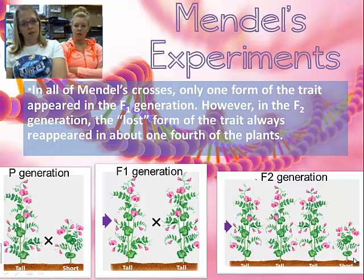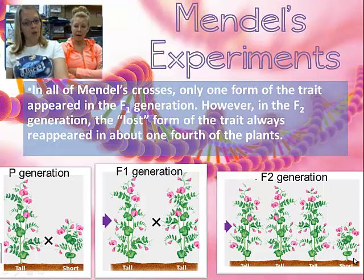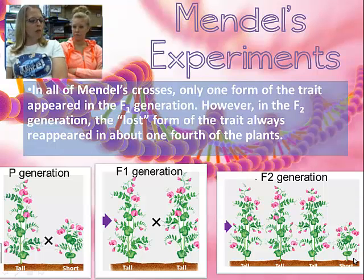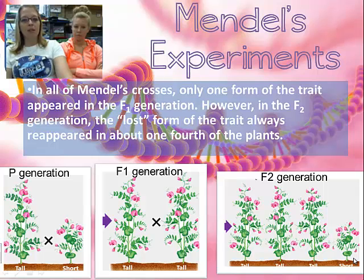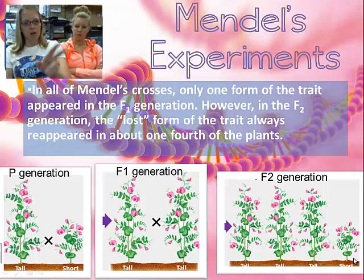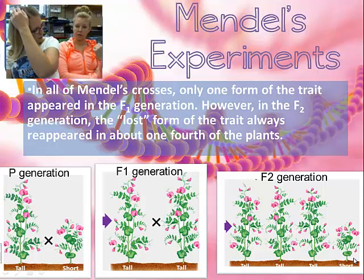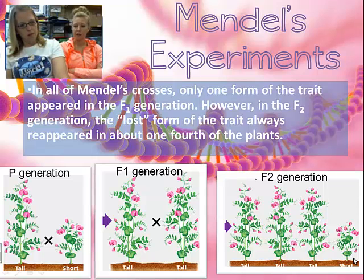These children grew up and had babies, creating the F2 generation — the grandkids of the P generation. In the F2 generation, the short characteristic pops back up. That shows you the short characteristic was never really gone — it was just hidden by the tall trait. This is what people mean when they say a trait 'skips a generation.' Keep in mind: P is parent, F1 is the first set of children, F2 is the second set. So if your parents are tall but your grandparents were short and you are short, that's an example of skipping a generation.